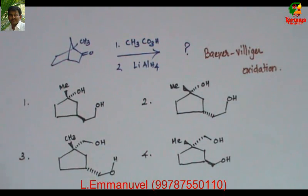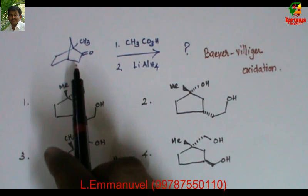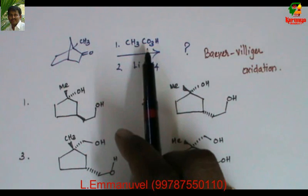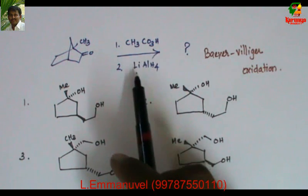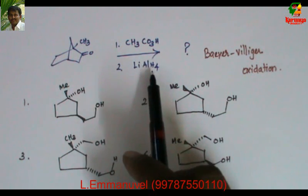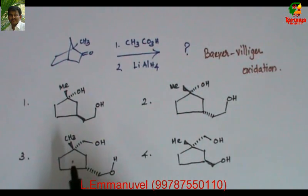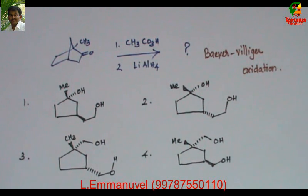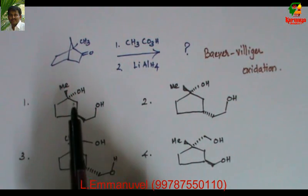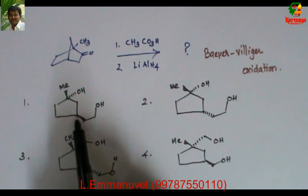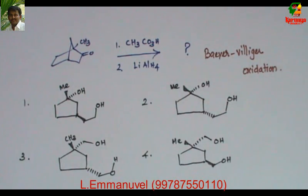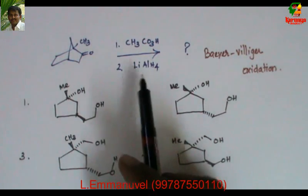Here is the problem: when this bicyclic ketone is treated with peracetic acid, followed by treatment with lithium aluminium hydride, what is the product? All four options are cyclopentane derivatives. The variation is in the stereochemistry of the alcohol and the chain. In order to solve this, you should know the product selectivity in Baeyer-Villiger oxidation and the reduction of ester with lithium aluminium hydride.